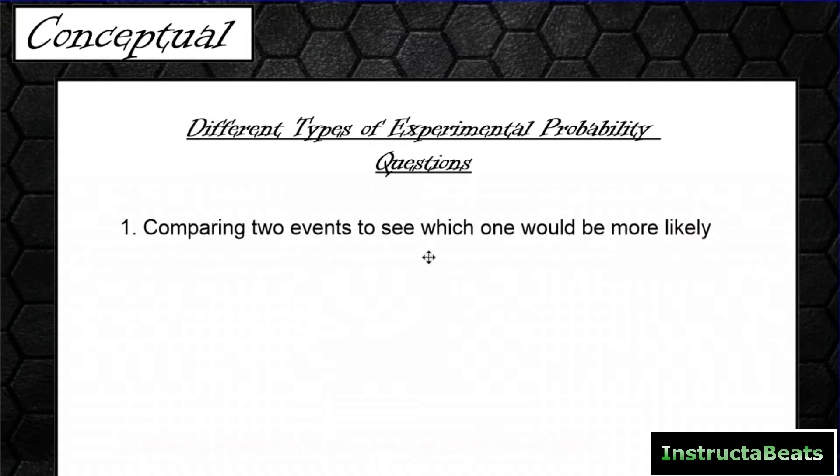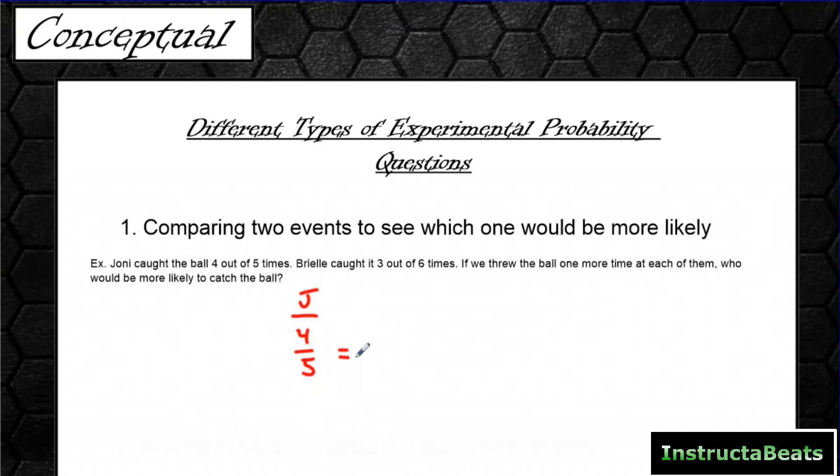The first one is comparing two events to see which one would be more likely. An example of that might say, Joni caught the ball four out of five times. Brielle caught it three out of six times. If we threw the ball one more time at each of them, who would be more likely to catch the ball? So you could come up with an experimental probability for Joni because she caught it four out of five times, and that's going to equal 80%. You could come up with one for Brielle because she caught it three out of six times, and that is going to equal 50%.